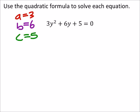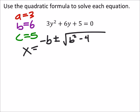So, when we solve for X, once again we have negative B plus or minus the square root of B squared minus 4 times A times C, all over 2A.